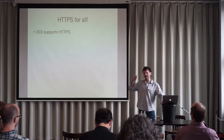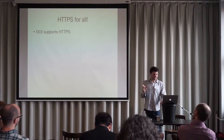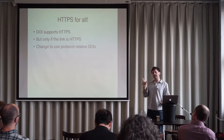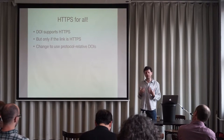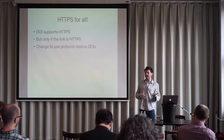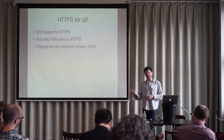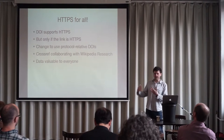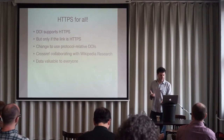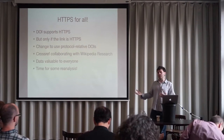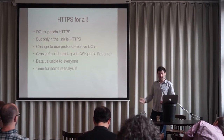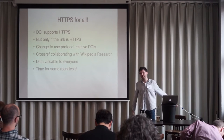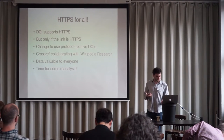DOI does support HTTPS, but only if you use the HTTPS link. There was a change within Wikipedia to make all DOI links protocol-relative — meaning if you're on HTTP, the DOI is HTTP; if you're on HTTPS, it's HTTPS. We collaborated with them to get that done and verify everything was working, because the data is valuable to researchers. They made the change, slowly phased it in, and it was time — a year later, after the original chronograph work — to do some re-analysis.